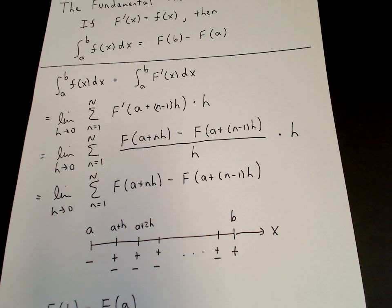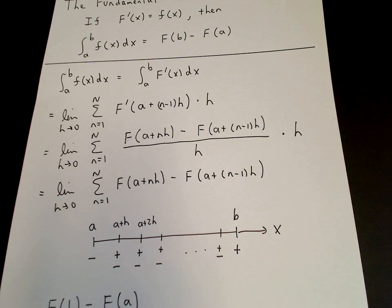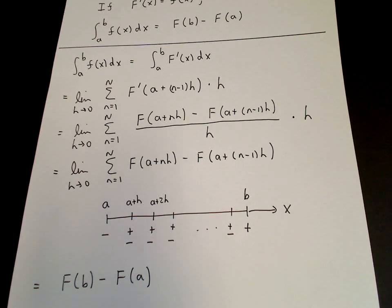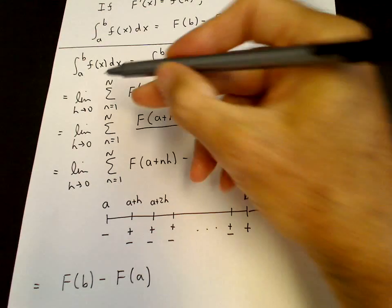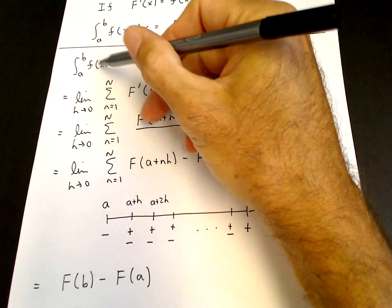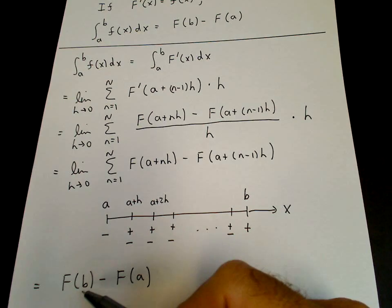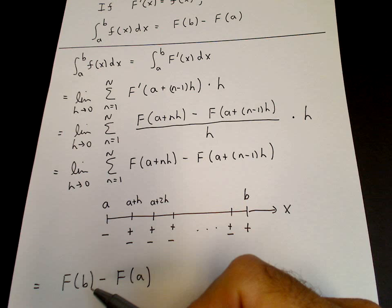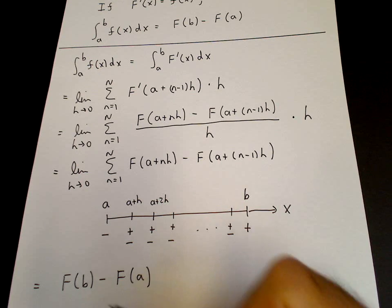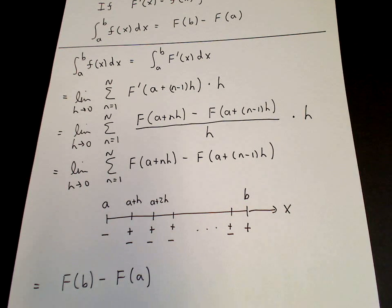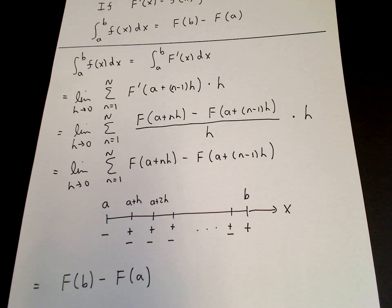And that proves the result. If capital F prime of x is equal to little f of x, then the integral from a to b of little f of x dx equals capital F of b minus capital F of a. The fundamental theorem of calculus.